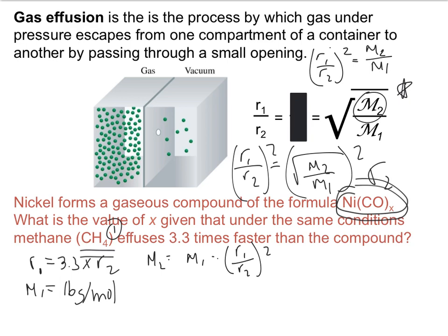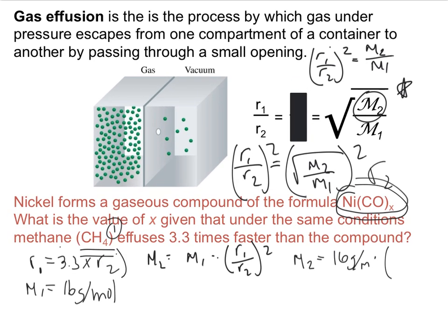We know some of these values, so let's go ahead and plug in the ones that we do know. M2 is going to be equal to 16 grams per mole, and we're going to multiply that by r1, which we know from right over here is equal to 3.3 times r2. So 3.3 times r2, and that's all over r2 squared.